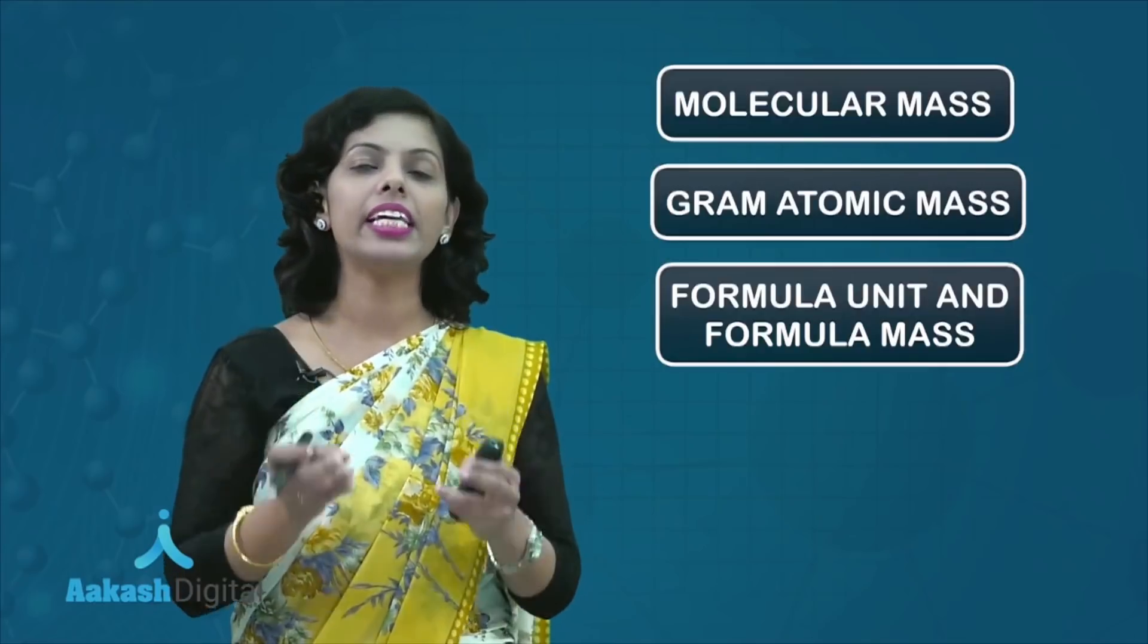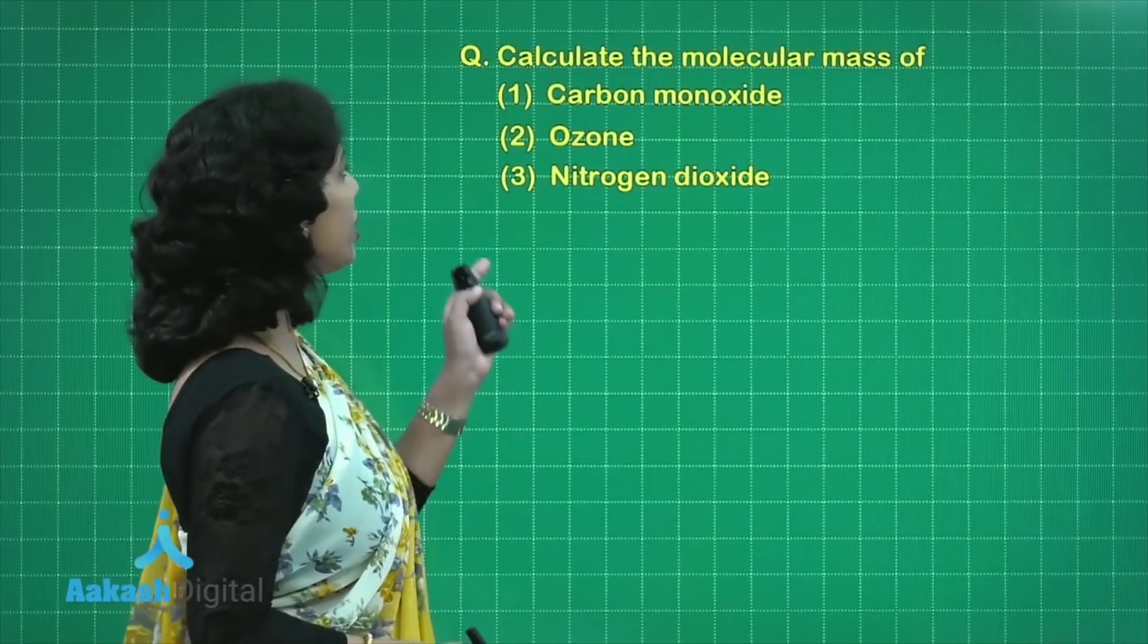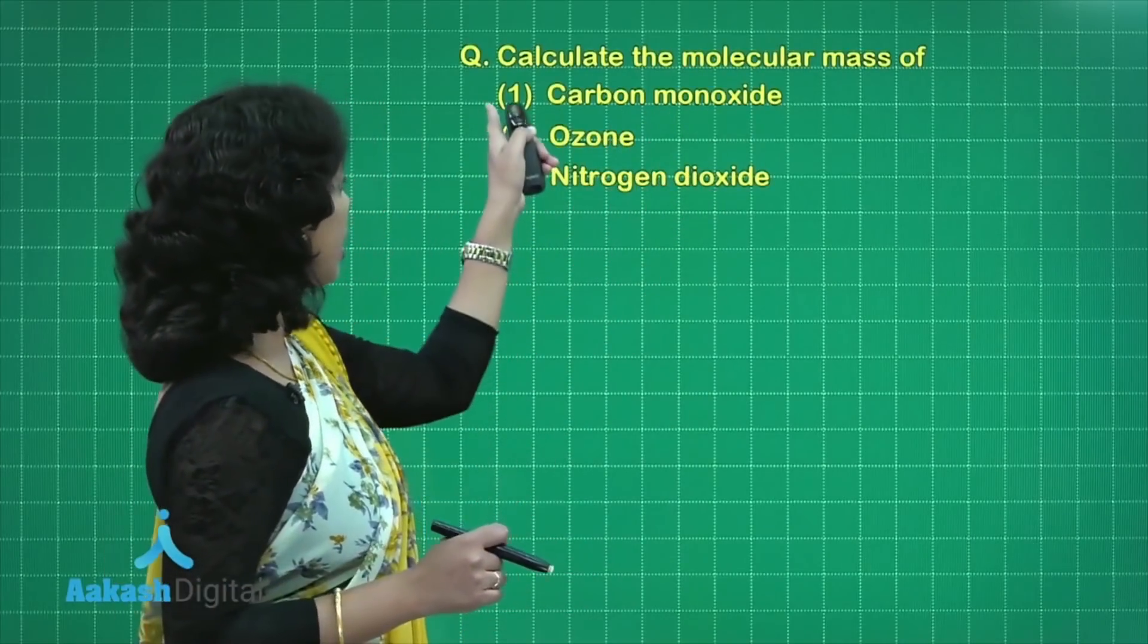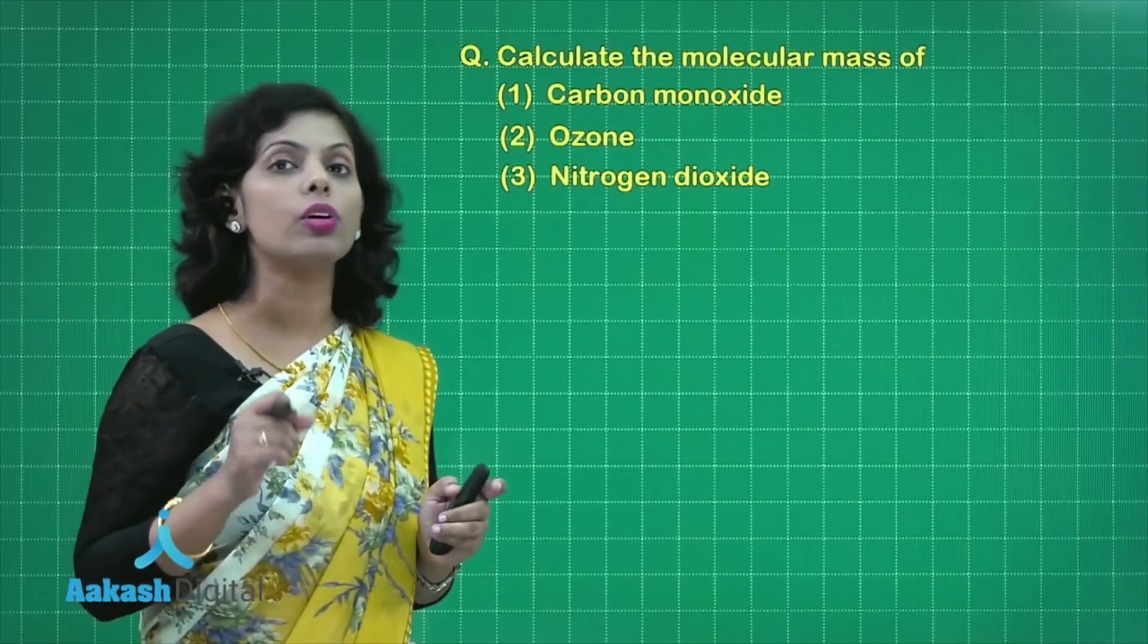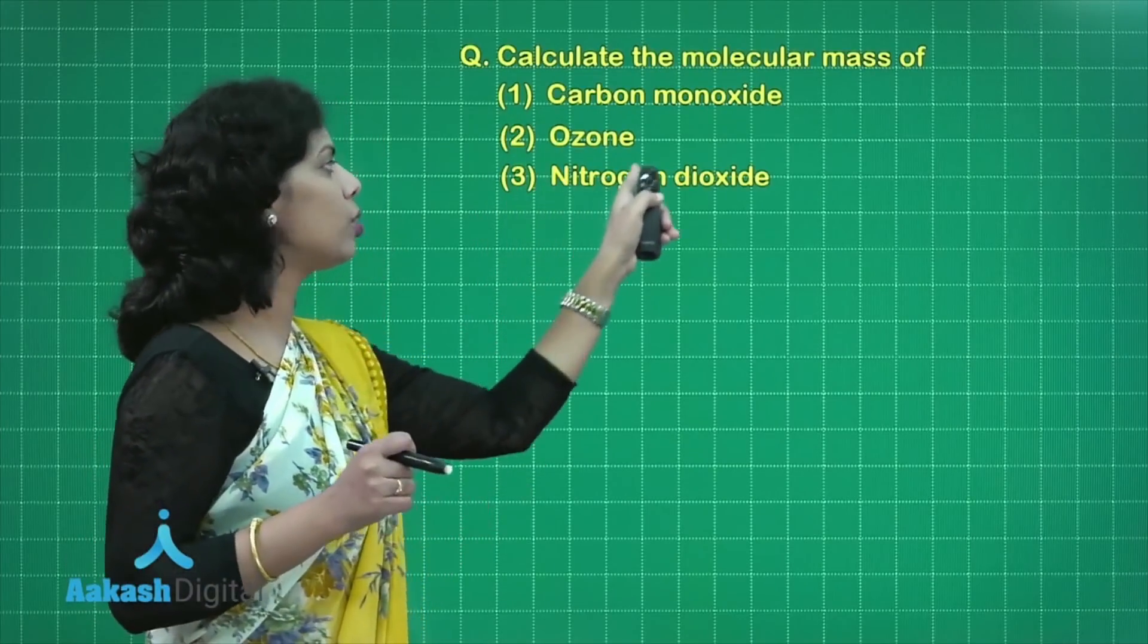These are the questions which involve very simple calculations. Let us solve the questions. Here the first question: calculate the molecular mass of carbon monoxide first, then ozone, and then nitrogen dioxide.